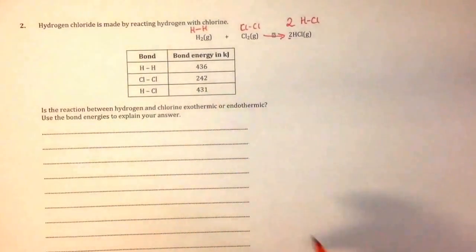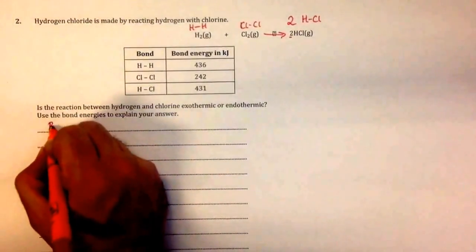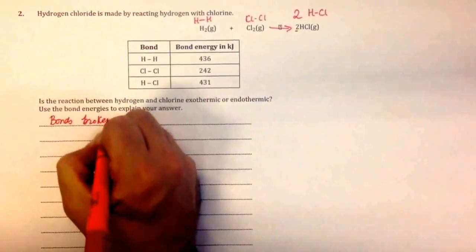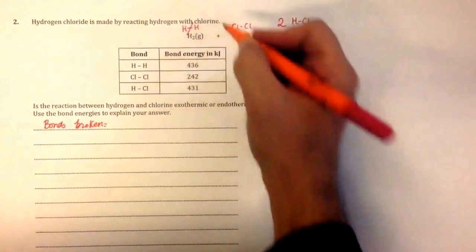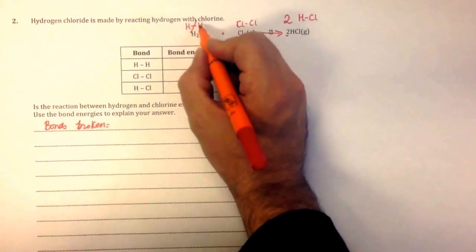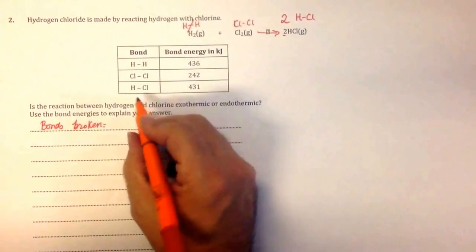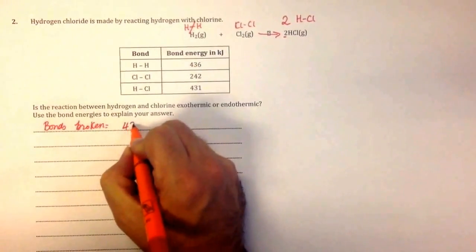Let's work out the energy change of the reaction. First, we need to work out the energy of the bonds broken. What have we got? We've got one hydrogen-hydrogen bond. I put a line through them to remind myself to count them, to show that I've used all the information in the question. One hydrogen-hydrogen bond is 436 kilojoules.